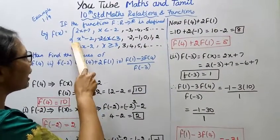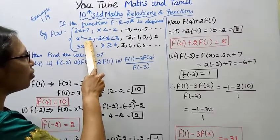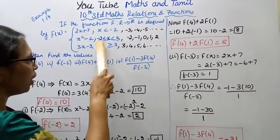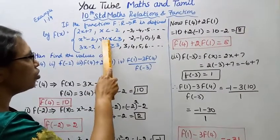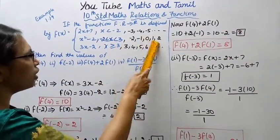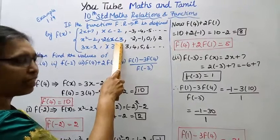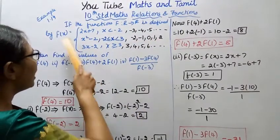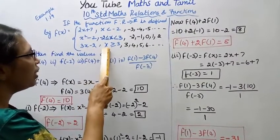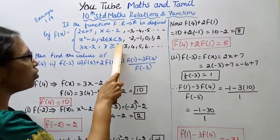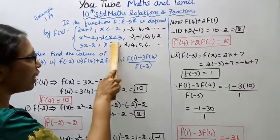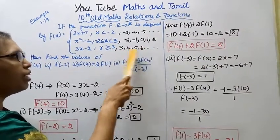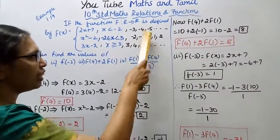Now, f(x) equals x square minus 2 when minus 2 is less than or equal to x less than 3. So minus 2, minus 1, 0, 1, 2 are in this range. And 3, 4, 5, 6 are when x is greater than or equal to 3. This is what you do. If you do not ask questions, it will be easy to answer.